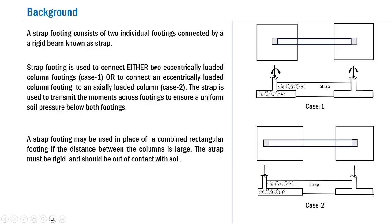Many textbooks and journal papers provide guidelines on how the stiffness of the strap must be ensured. One important criterion from a journal paper states that the ratio of the stiffness of the strap to the stiffness of the footing must be greater than 2. As shown in the sketches, the bottom of the strap is kept out of contact with the soil so that there is no pressure transfer between the strap and the soil.